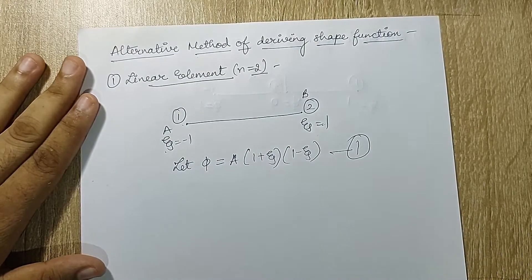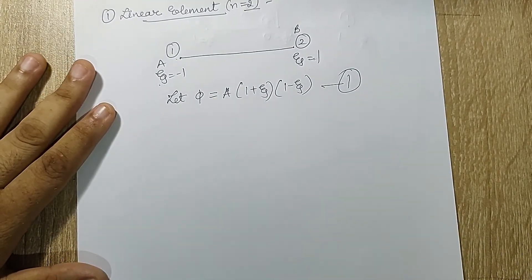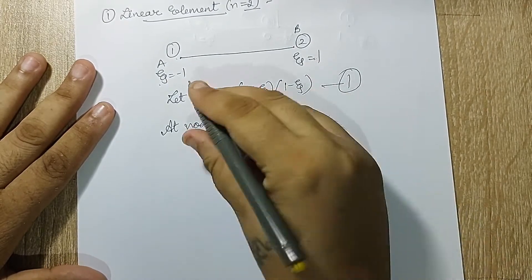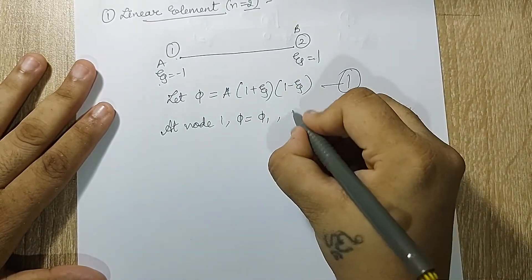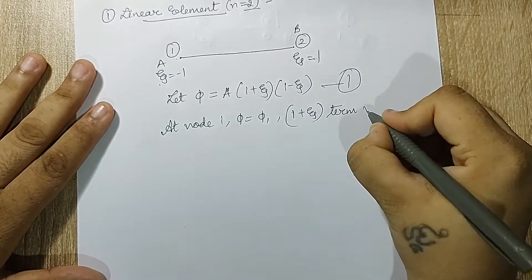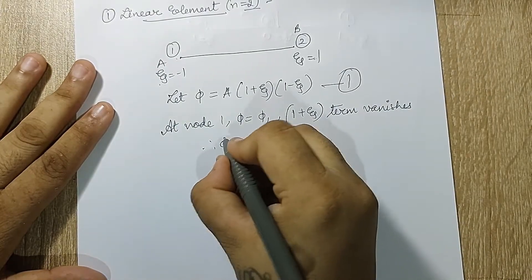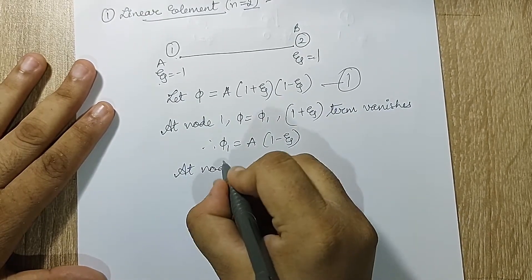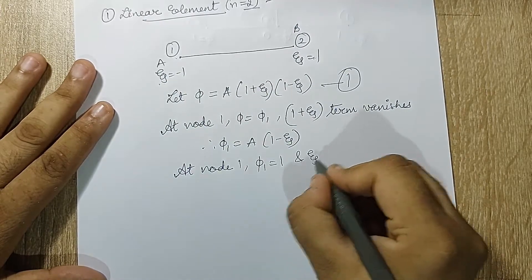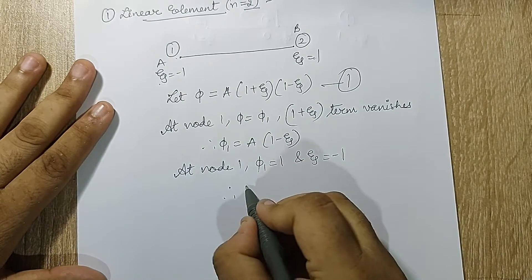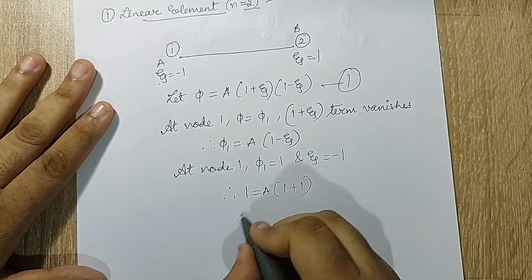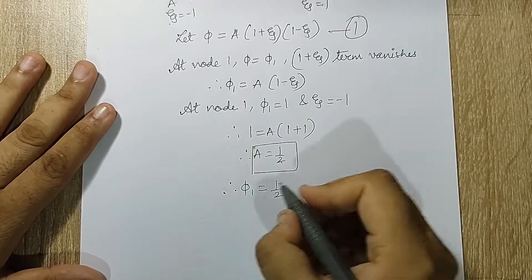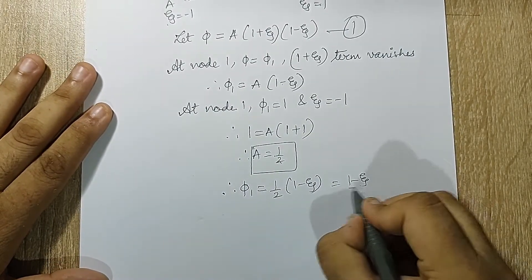At node 1, φ = φ₁ and the term (1 + ζ) — contributed by node 2 — must vanish, so φ₁ = a·(1 - ζ). At node 1, φ₁ = 1 and ζ = -1, therefore 1 = a·(1 + 1) = 2a, so a = 1/2. Substituting gives φ₁ = (1 - ζ)/2, which is the same answer as before.